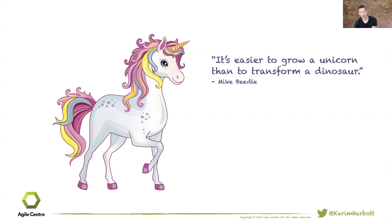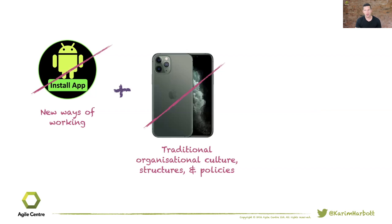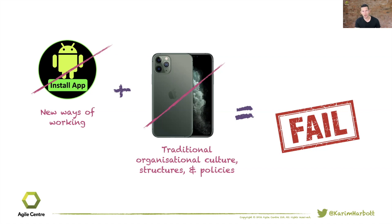So maybe Mike had a point — it's difficult. The analogy I like to use: if you put an Android app on an iPhone, it would fail. Nothing wrong with the app; nothing wrong with the iPhone. There's a compatibility issue. If we try to install new ways of working — Scrum, design thinking, Jira, whatever — onto a traditional organizational culture, traditional structures, hierarchy, and policies, it will also fail. Not because there's anything wrong with those ways of working, but there is a compatibility issue. We need to deal with the underlying organizational operating system first. That's what the Six Enablers is about.